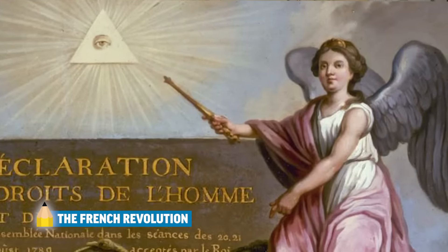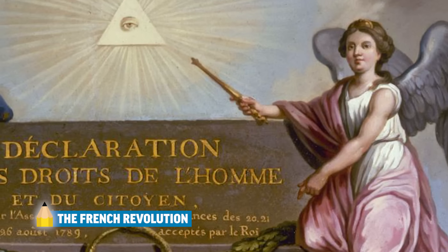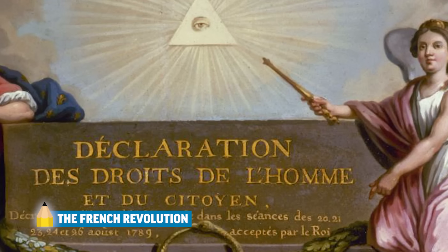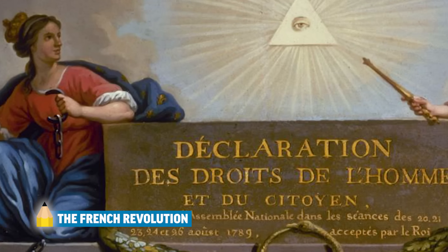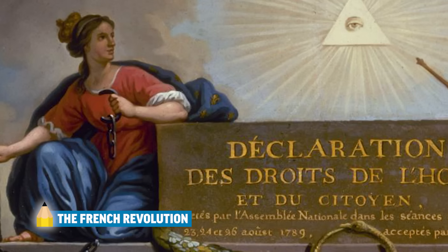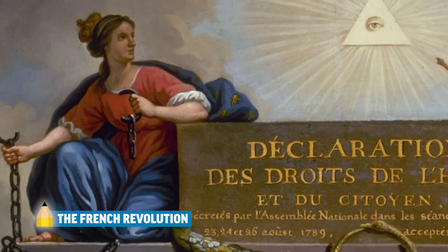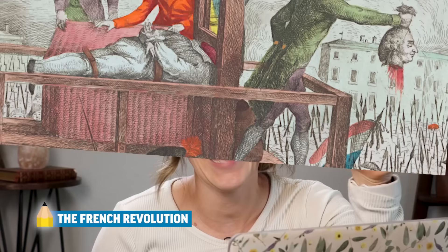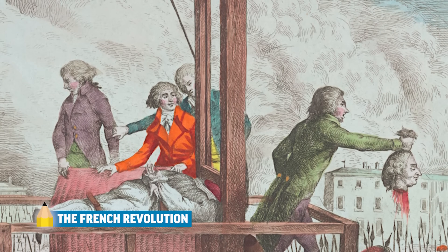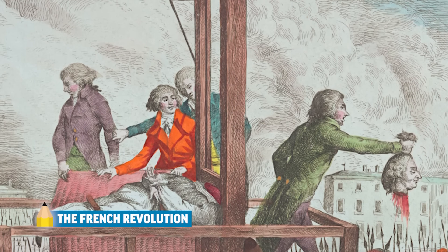Motivated by the American Revolution, the French people likewise fight against their monarchy. Suffering under famine and taxes, and inspired by Enlightenment ideals, the Third Estate drafts their Declaration of the Rights of Man and Citizen and successfully fight for a constitutional monarchy. But then things get radical with another regicide — the beheading of King Louis XVI — and the Reign of Terror begins.